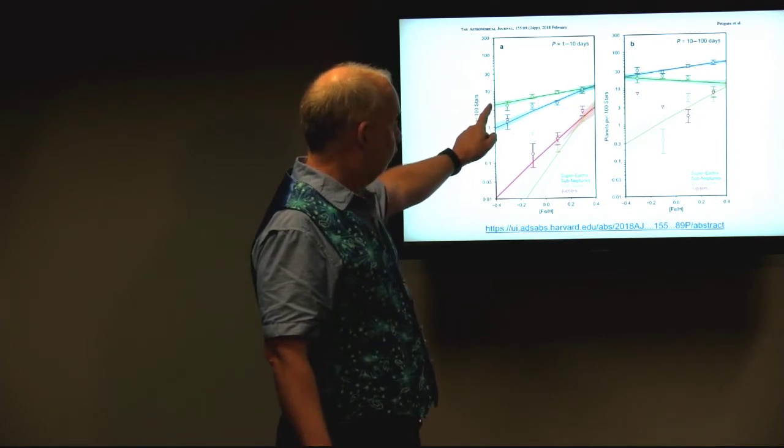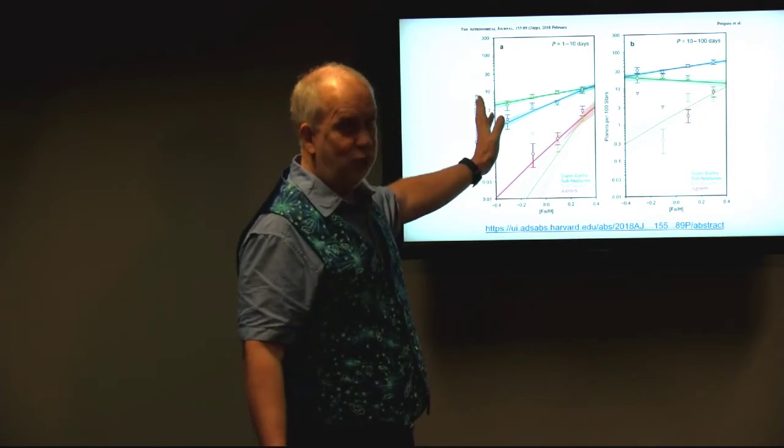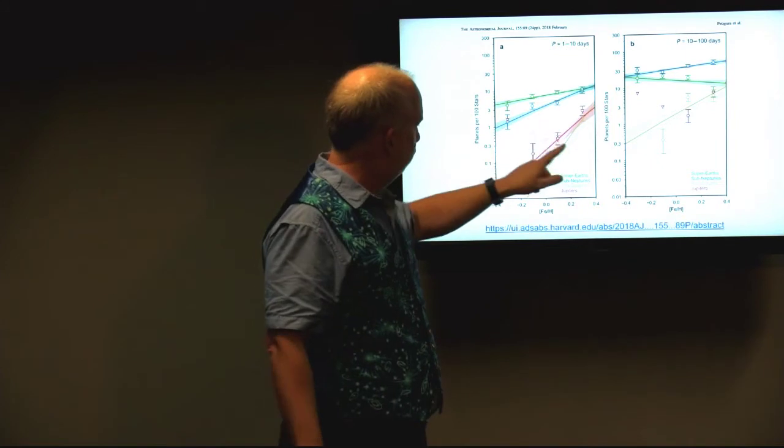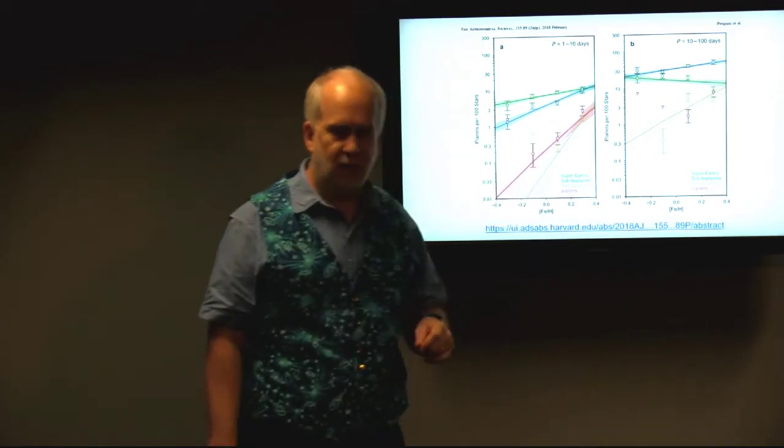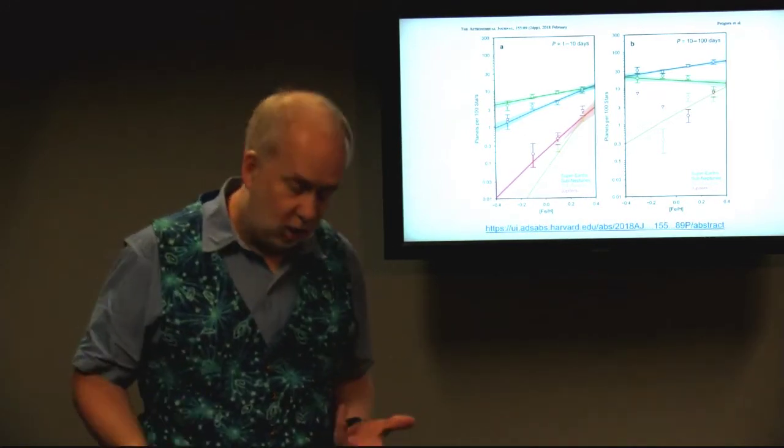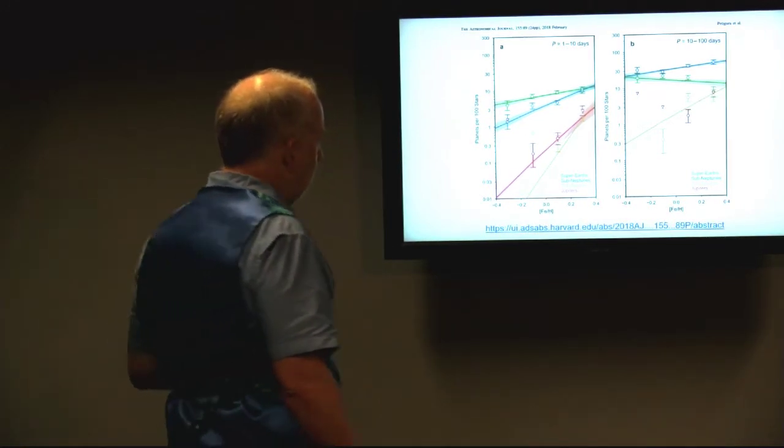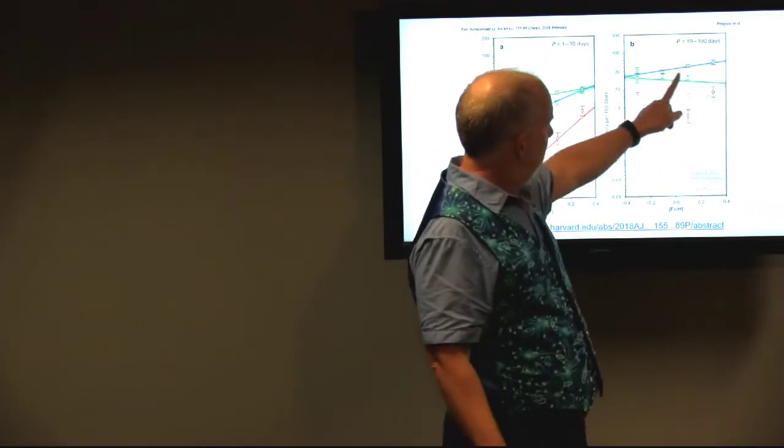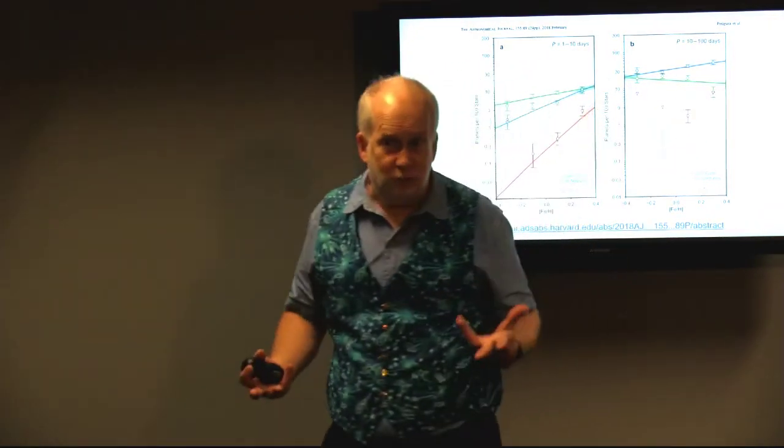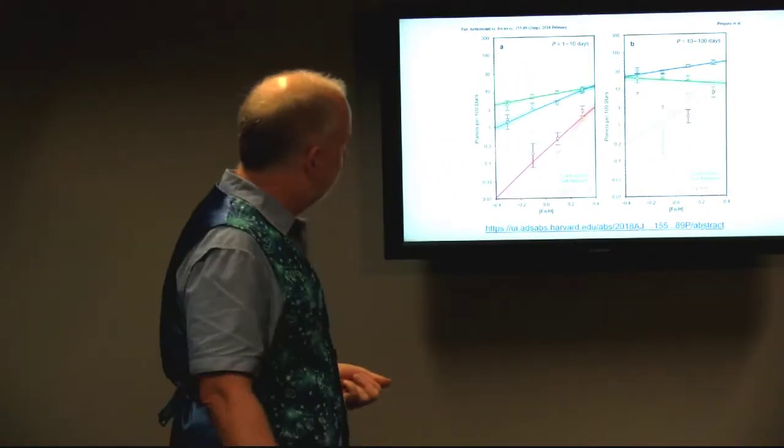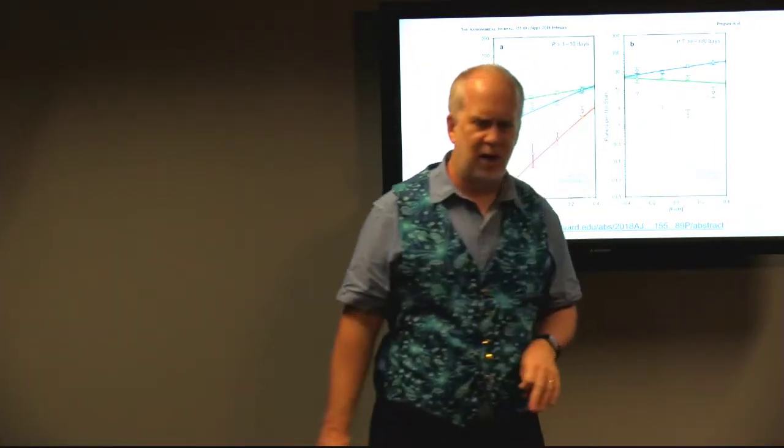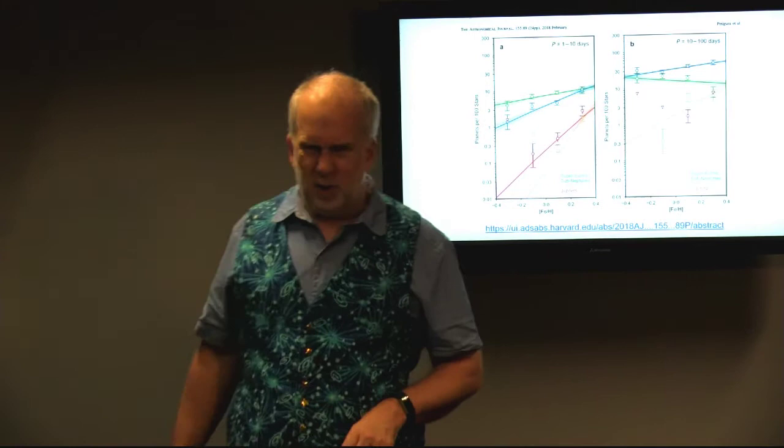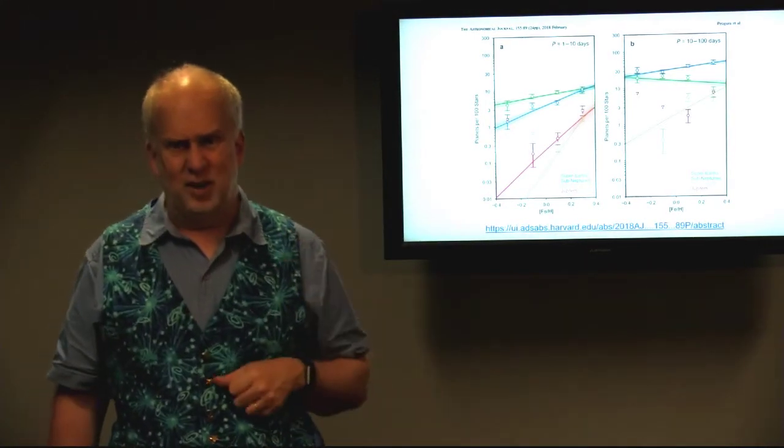But for the really small ones, the super-Earths - it's the smallest you can see, they're still pretty big planets - there's not much of a trend, whereas if you get to bigger and bigger ones like Jupiters and sub-Saturns, there's a very big trend. You definitely see more of those in the stars with lots of heavy elements. When you go further out, here it's 10 to 100 days, which of course is still very close to the star, it becomes a bit more confusing. There's actually no clear obvious trend. Some things go up, some things go down.